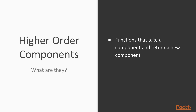In general, higher order components are basically functions that take a component as an input and return a new component. The idea behind it is that we can use cross-component functionality. For example, if we have two components doing different things but we want both of them to have the same functionality for one specific aspect, we can use higher order components for that.